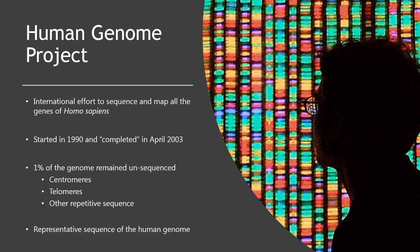In May 2006, another milestone was passed when the sequence of the last chromosome was published in the journal Nature. Completed in April 2003, the Human Genome Project gave us a complete representative sequence of the human genome. The representative sequence is a composite from several people who donated blood samples; originally close to 100 people volunteered to give a sample of their blood.